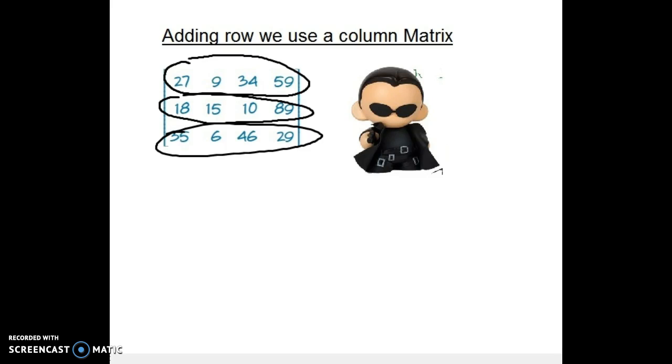What you need to do is count how many numbers you want to add. You want to add one, two, three, four numbers? Then you multiply it with a matrix in this way. You times the matrix with another matrix at the back in this form.